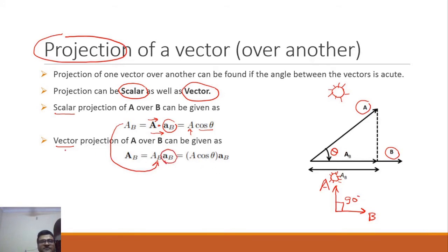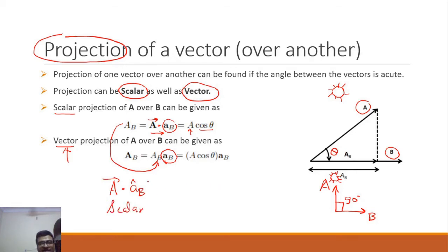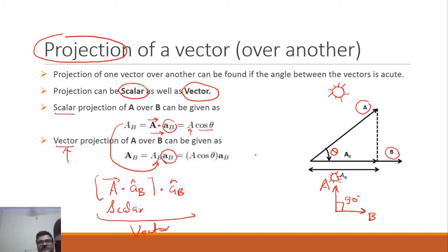Vector projection is obtained by multiplying the scalar projection result again with b's unit vector. The simplest way to remember this: first understand scalar projection — multiply vector a with the unit vector of b to get a scalar quantity. Then multiply that scalar result again with the direction of b to get vector projection. No need to memorize complex formulas.